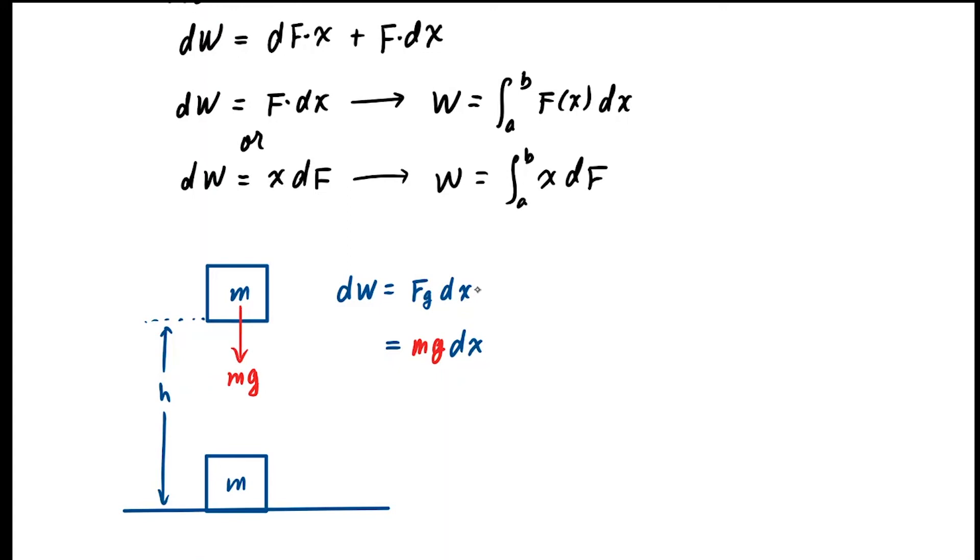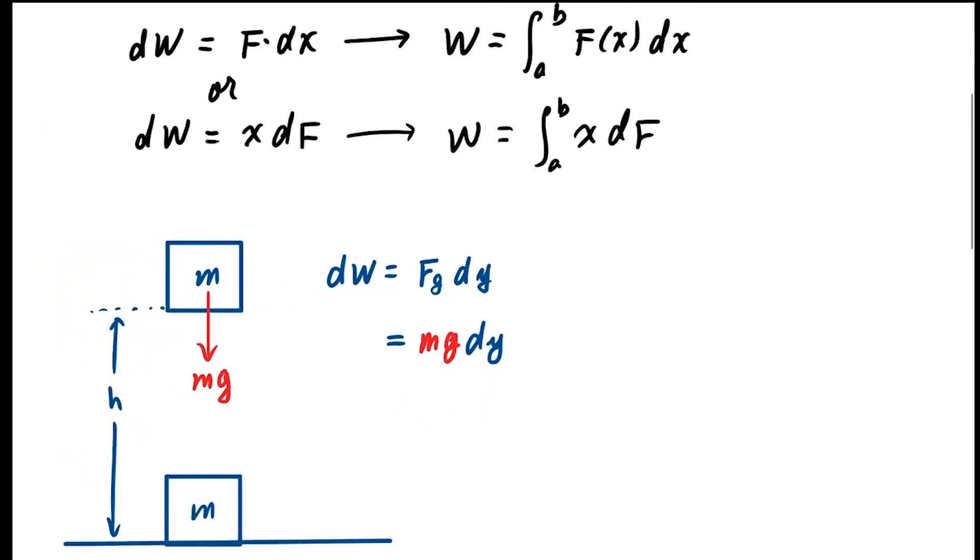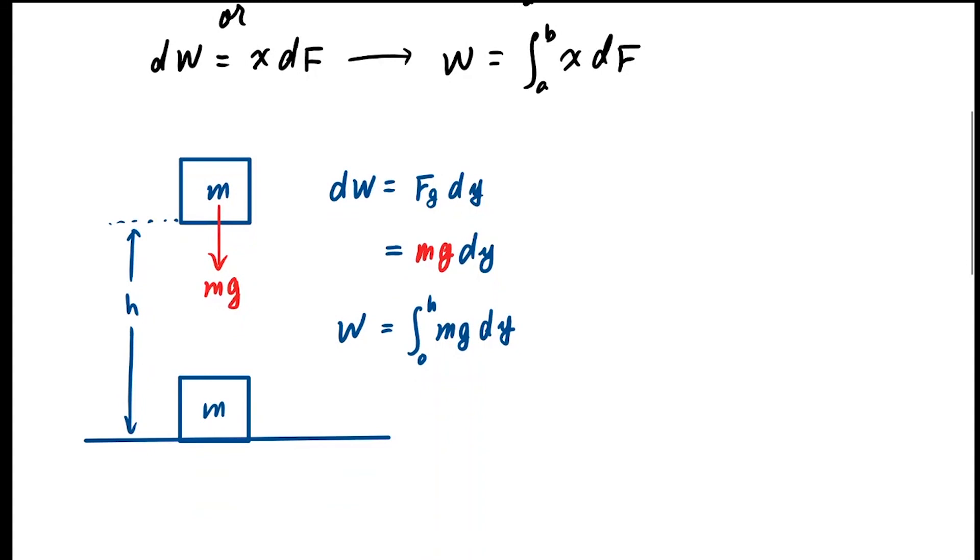This is x, but I'm going to call it y since it's vertical motion, dy. So far so good. Now we can integrate. Work is integral from zero to h of mg dy. That's going to be mg·y from zero to h, which gives us mg·h, which is what your physics teacher taught you.